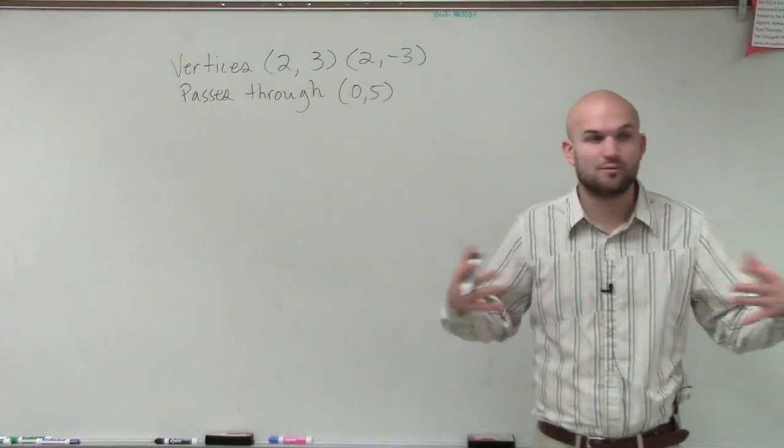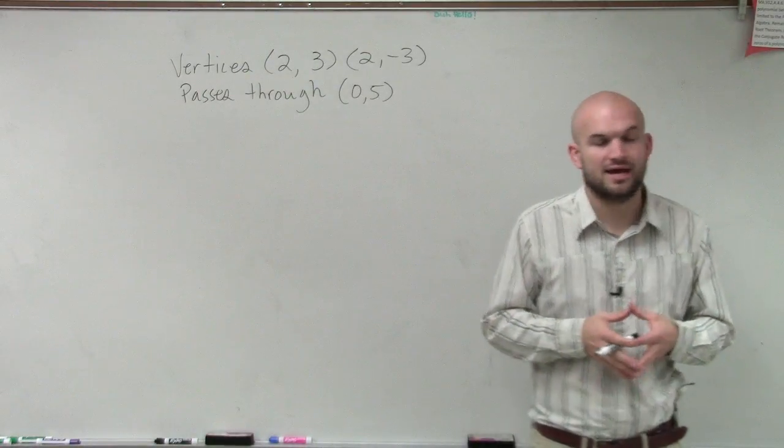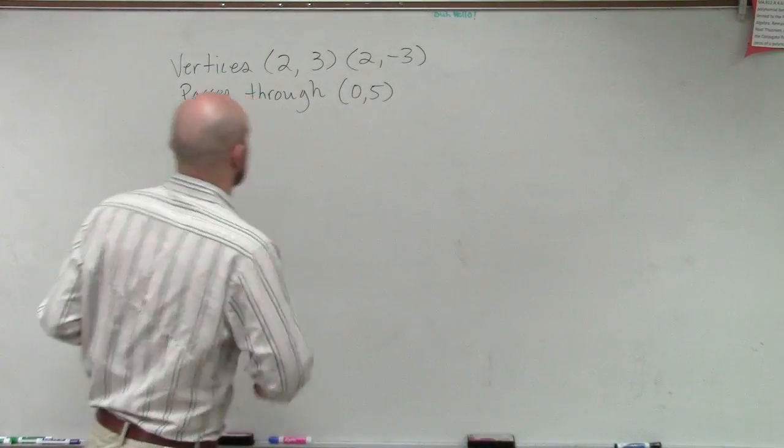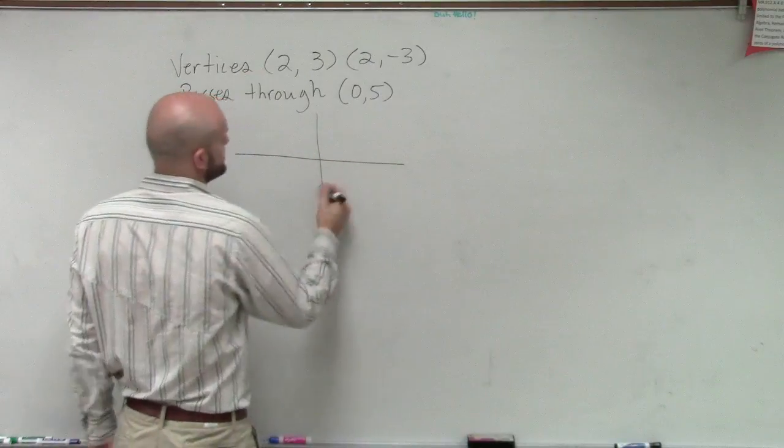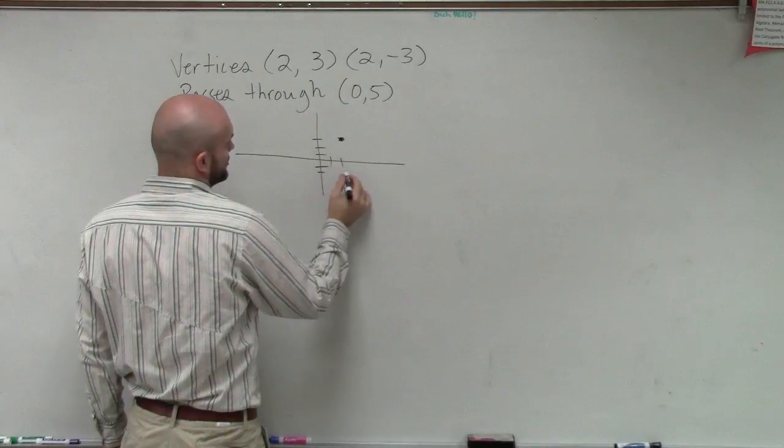Now again, before we even decide what formula we want to use, we want to make sure to determine is it going to be a hyperbola with a horizontal transverse axis or a vertical. So let's just plot the points that we have. We have vertices at (2,3) and at (2,-3).